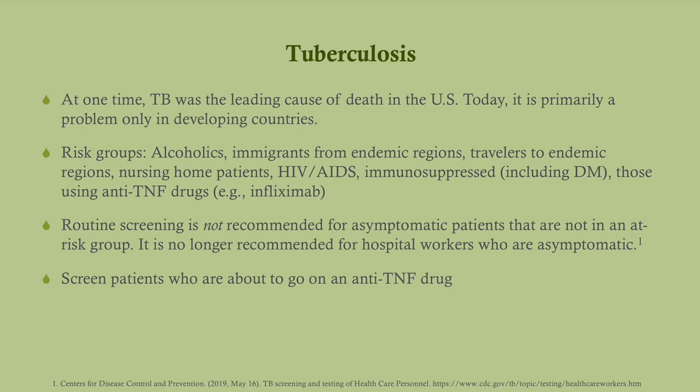If you're treated with TB you're not contagious. The big risk groups in the United States are immigrants who come from endemic regions, travelers who went to endemic regions, immunosuppressed people, and those on anti-TNF drugs — this is a big one. Infliximab is the big one. Those are going to be patients who are being treated with immunomodulators for things like Crohn's disease or rheumatoid arthritis.